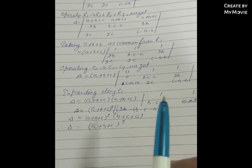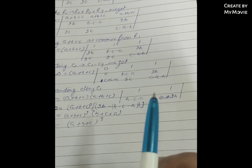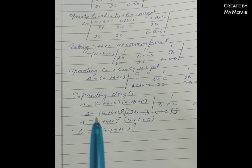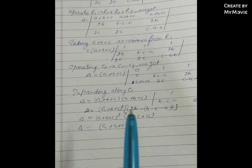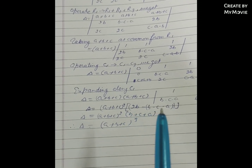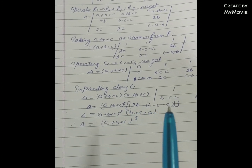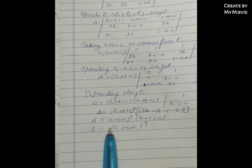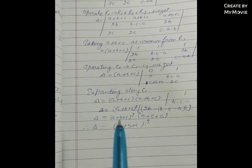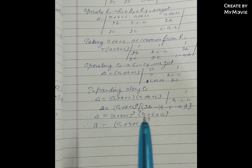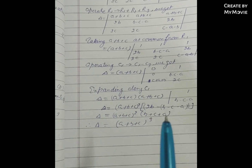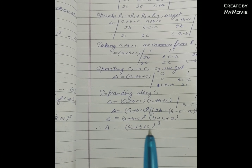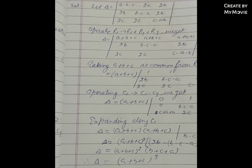Expanding along C1, this equals (a+b+c) · (a+b+c) · determinant of [[1, 1], [(b−c−a), 2b]], which equals (a+b+c)² · (2b − (b−c−a)) = (a+b+c)² · (b+c+a). Therefore delta = (a+b+c)³.